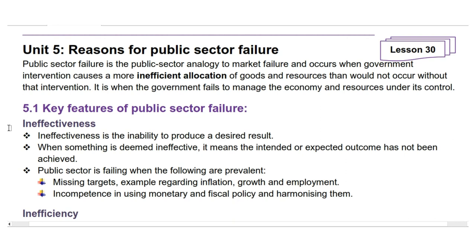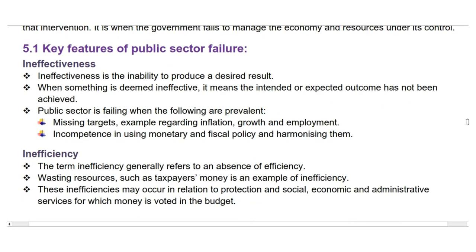Key features of public sector failure. Ineffectiveness is the inability to produce a desired result. When something is deemed ineffective, it means the intended or expected outcome has not been achieved. The public sector is failing when the following are prevalent: missing targets — for example regarding inflation, growth and employment — and incompetence in using monetary and fiscal policy and harmonizing them.